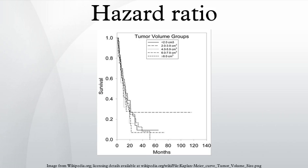Such models are generally classed proportional hazards regression models, the best known being the Cox semi-parametric proportional hazards model, and the exponential, Gompertz and Weibel parametric models. For two groups who differ only in treatment condition, the ratio of the hazard functions is given by the estimate of treatment effect derived from the regression model.